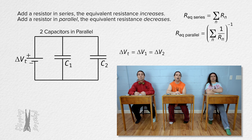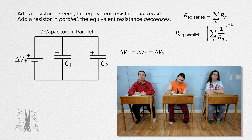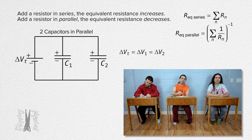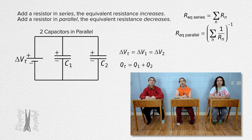Because the charges moved by the battery to the top plates of the capacitor need to go to either capacitor 1 or capacitor 2, the charge moved by the battery to the plates of the capacitors equals the sum of the charges on the capacitors.